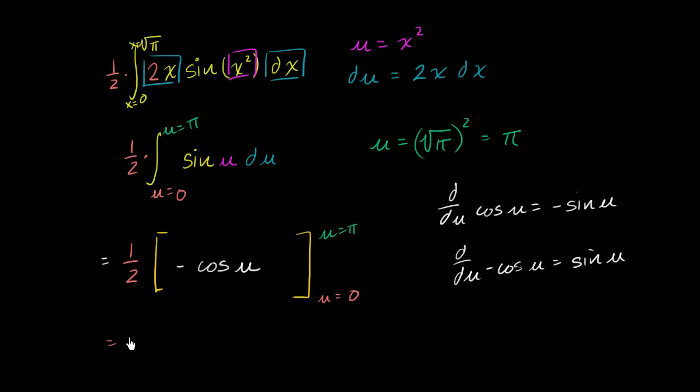So this is going to be equal to 1 half times, well, what happens when we evaluate it at u equals π? Negative cosine of π.